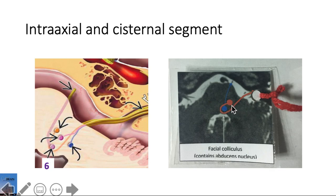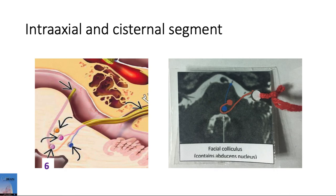Here on the right in our model, we see the facial nerve nucleus with its fibers looping around the abducens nucleus. So just remember the facial colliculus has in it the nucleus of cranial nerve 6, as well as the looping fibers of cranial nerve 7.